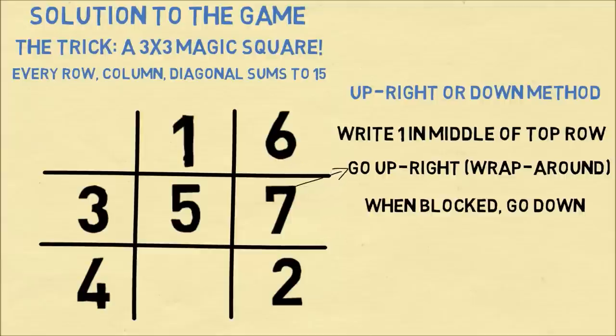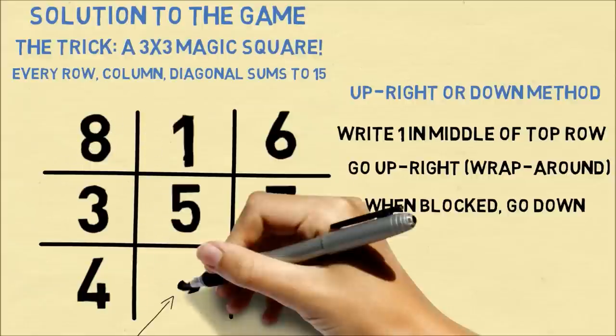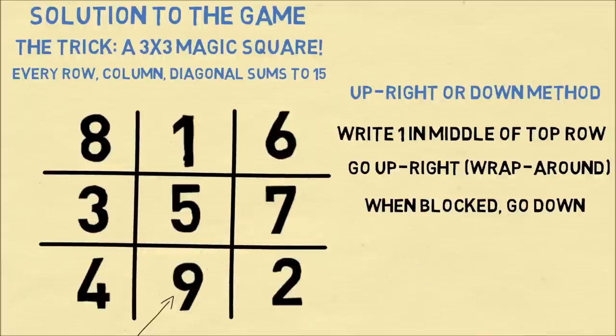And we continue filling it out. We'll figure out where the 8 is by going up and to the right. And the 9 will also be up and to the right of 8. As you get a few of these in, you can also fill them out just by knowing that the sum of each row or diagonal or column will be 15.